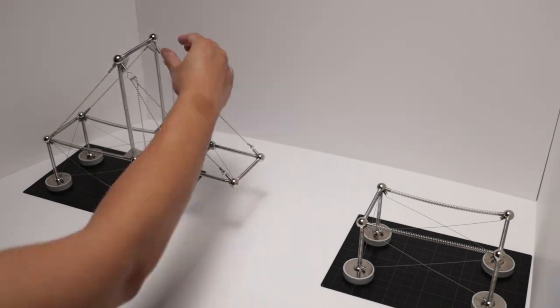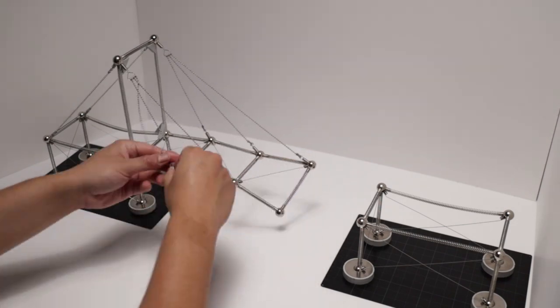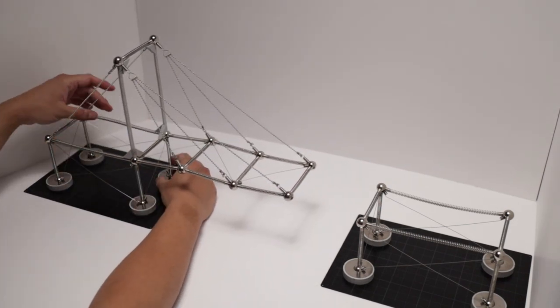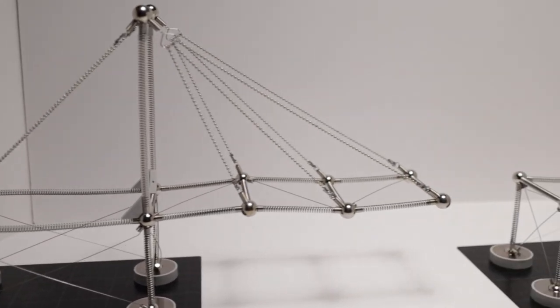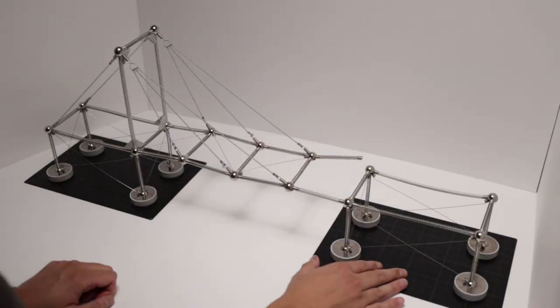And as we're continuing to build the bridge, we're bracing the diaphragm just because if you don't, your diaphragm or your members are just going to be flying everywhere. So it's good to note during the construction sequence that you still need structural elements. Now it's time to finish off the bridge.